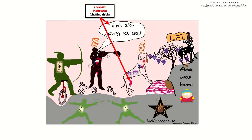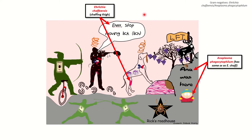The mnemonic is 'lick' referring to the dog for 'er,' and 'lick' for 'lichia,' so Ehrlichia — as well as Anaplasma phagocytophilum.